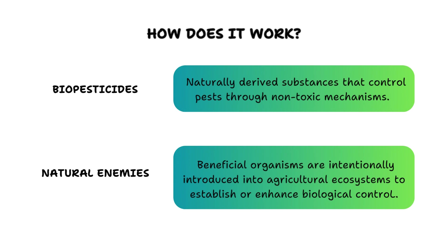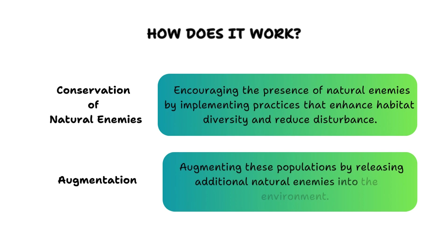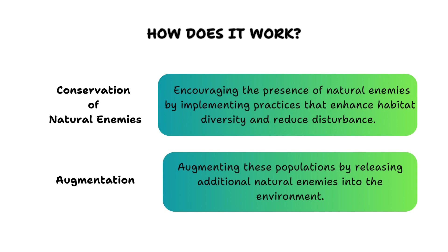Biopesticides are derived from natural materials like plants and microorganisms; they target pests specifically and spare beneficial organisms. Natural enemies encompass a wide range of organisms — including predators, parasitoids, and pathogens — that naturally regulate pest populations. Conservation of natural enemies involves enhancing habitats to support beneficial organisms, while augmentation involves releasing additional individuals to enhance their impact on pest control.